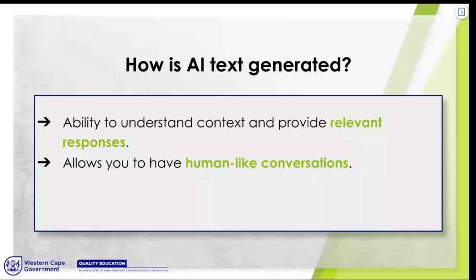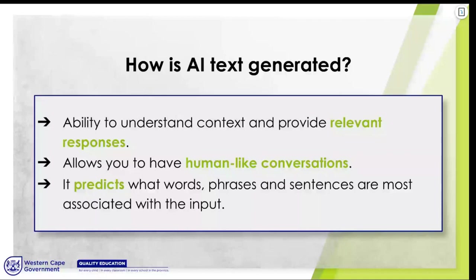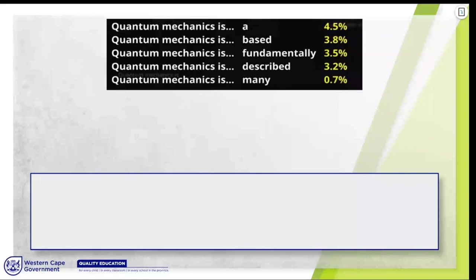AI predicts what words, phrases, and sentences are most associated with the input. For example, if I type 'quantum mechanics is,' the AI algorithm calculates that the probability of the next word being 'a' is 4.5%, or the probability of 'based' is 3.8%, and then it generates the response word for word based on that probability and the context you've given it. So 'quantum mechanics is fundamentally a probabilistic' — it generates bit by bit, asking itself: given the text so far, what should the next word be?